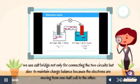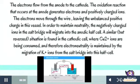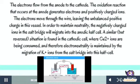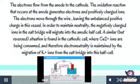The salt bridge not only connects the two circuits but also maintains charge balance as electrons move from one half-cell to the other. Electrons flow from the anode to the cathode. The oxidation reaction at the anode generates electrons and positively charged ions. The electrons move through the wire, leaving an unbalanced positive charge. To maintain neutrality, negatively charged ions from the salt bridge migrate into the anodic half-cell. A similar situation occurs in the cathode cell, where copper ions are consumed and electroneutrality is maintained by migration of potassium ions.